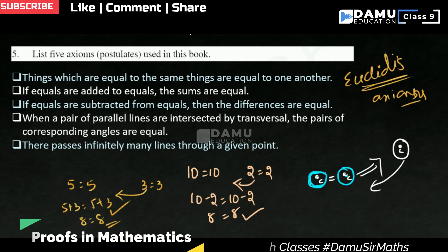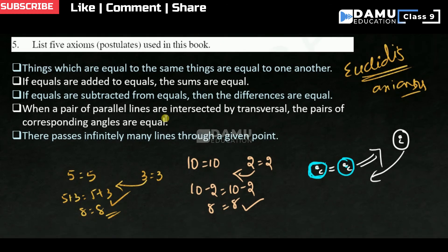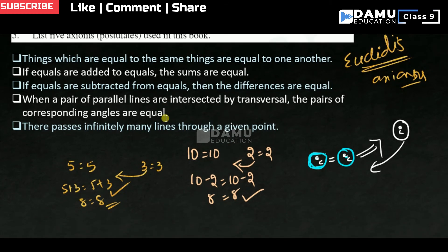When a pair of parallel lines are intersected by a transversal, the pair of corresponding angles are equal. Let us take a pair of parallel lines - these are two parallel lines, L and M. Let us take this as the transversal T. The pair of corresponding angles - this is one angle and this is another angle. These two angles are equal.